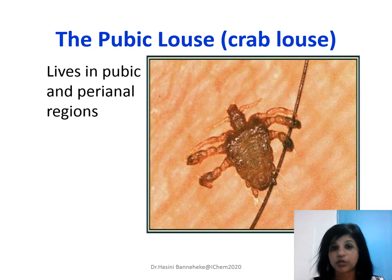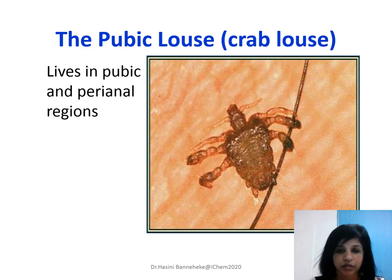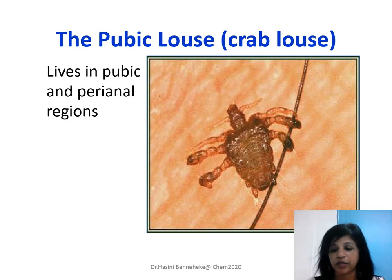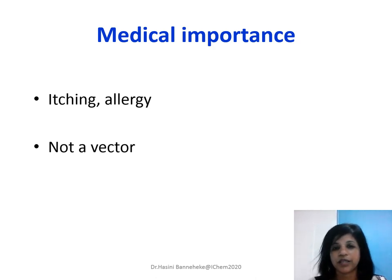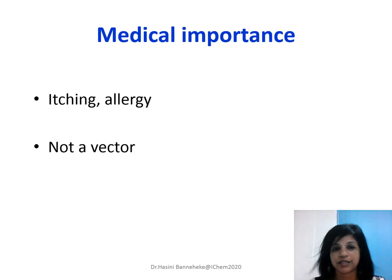Moving on, this is the pubic louse, also called crab louse. The name is given because the appearance looks like a crab — the tip of the legs and the body shape resemble a crab. The medical importance of pubic louse is that it causes infestation in the groin area, in the hair of the groin area, but it does not transmit diseases. Of the three lice, only the body louse transmits diseases; head lice and pubic lice do not transmit any diseases but they cause itching and allergic reactions.